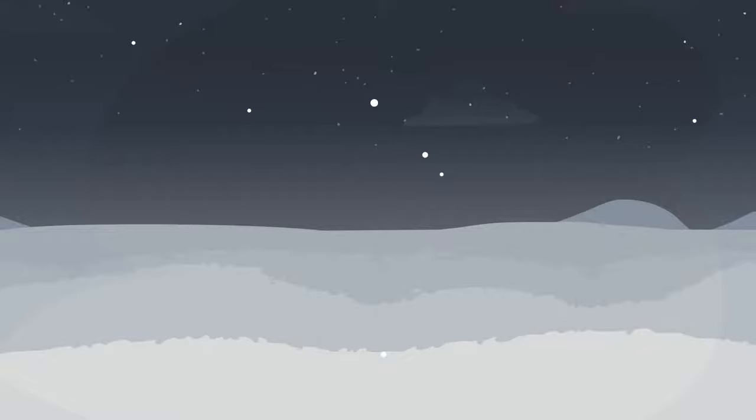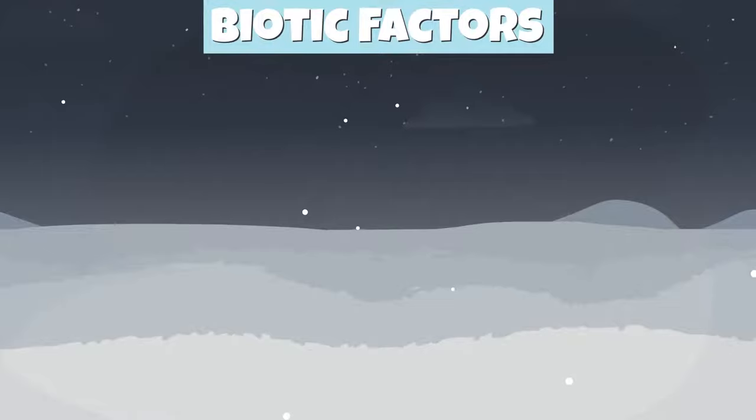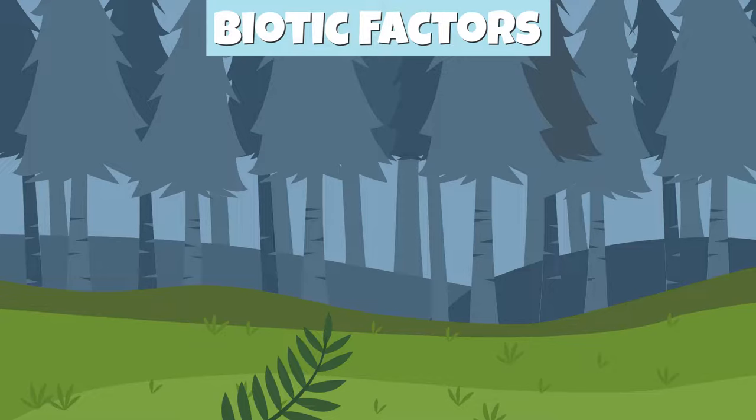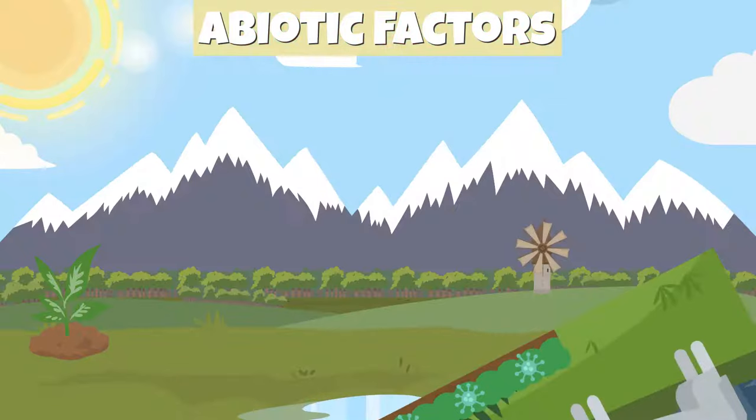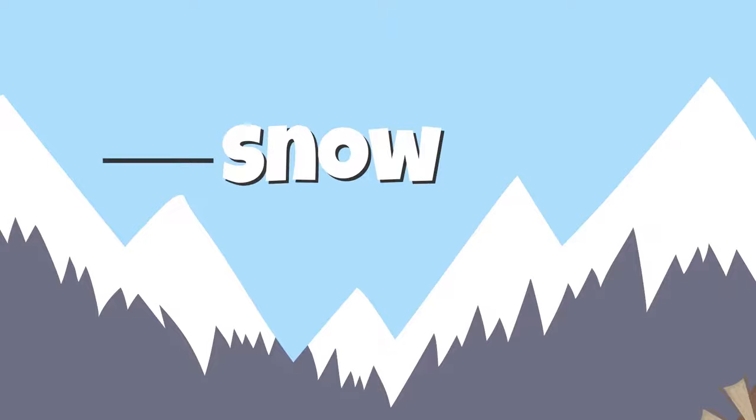Some examples of living things or biotic factors include polar bears, penguins, wolves, foxes, and mosses. Some examples of abiotic factors include rocks, soil, snow, air, temperature, and water.